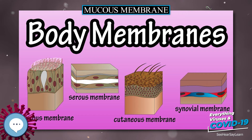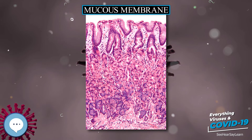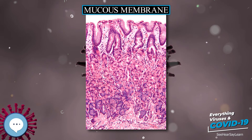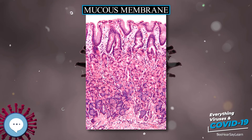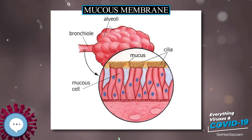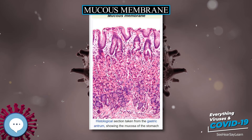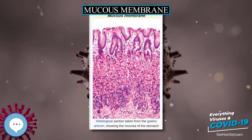They are at several places contiguous with skin — at the nostrils, the lips of the mouth, the eyelids, the ears, the genital area, and the anus. Along with providing a physical barrier, they also contain key parts of the immune system and serve as the interface between the body proper and the microbiome. Some examples include: